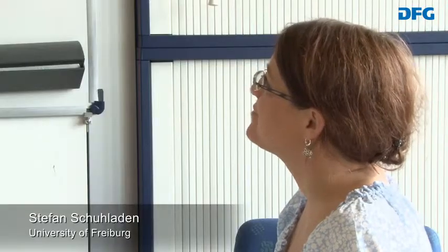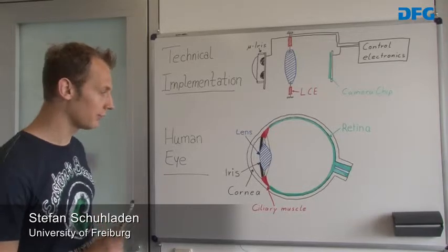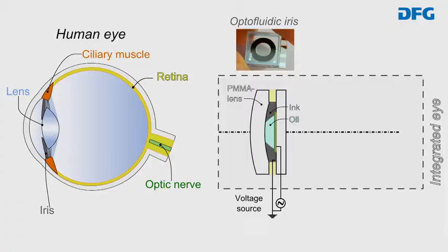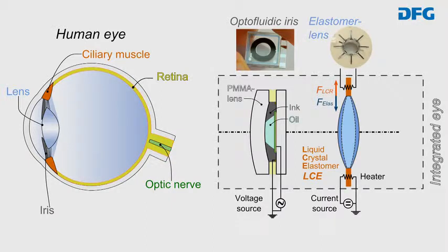We can try a drawing. For the technical implementation of our system, we use soft materials. We use liquids for the micro iris, and we use liquid crystal elastomers in order to deform a tunable lens.